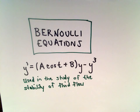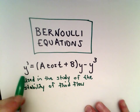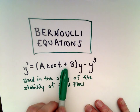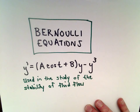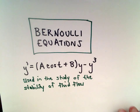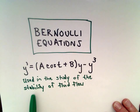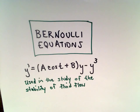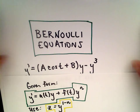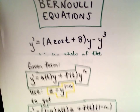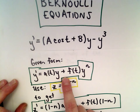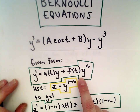Here's one more example of solving a Bernoulli equation from differential equations. We're going to solve the equation y prime equals a multiplied by cosine of t, plus b multiplied by y, minus y to the third. This equation is actually used in the study of the stability of fluid flow — it's not just some random equation. Recall that we want our equation in the form y prime equals a(t) multiplied by y plus f(t) multiplied by y to the n.